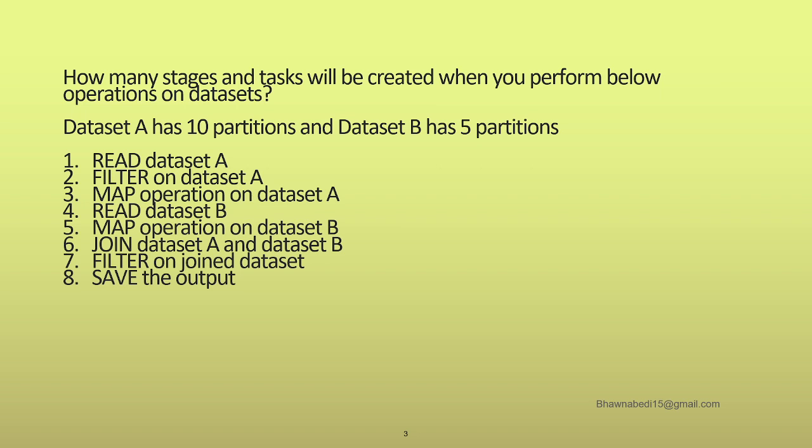When you read dataset B and apply a map transformation on dataset B, again these two operations do not involve any shuffle by themselves — so this becomes stage 2. When you then do a join, this is where shuffle is involved. The join, the filter on the joined dataset, and saving the output can all come in another stage — stage 3. So steps 1, 2, 3 go to stage 1; steps 4 and 5 go to stage 2; steps 6, 7, 8 go to stage 3.